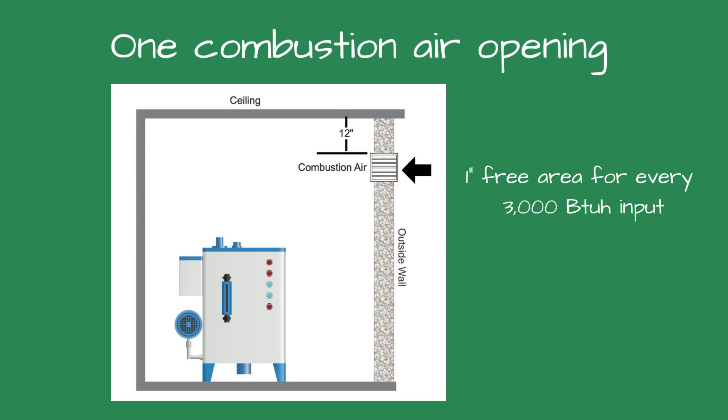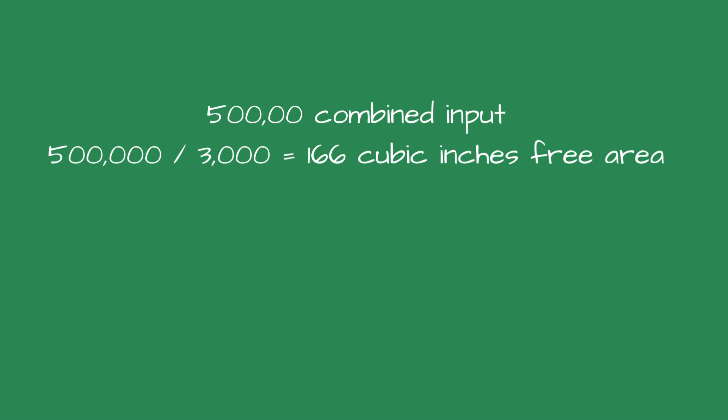Suppose you have a boiler with a rated input of 460,000 BTUs and a 40-gallon water heater with a rated input of 40,000 BTUs. This would total 500,000 BTUs. To calculate the required opening, the code says you must divide the combined input for all fuel-fired equipment by 3000. So we would need 166 inches of free area to meet the combustion air requirements for the room.